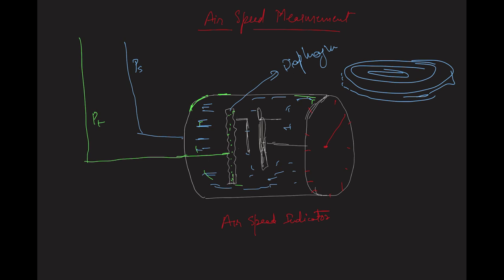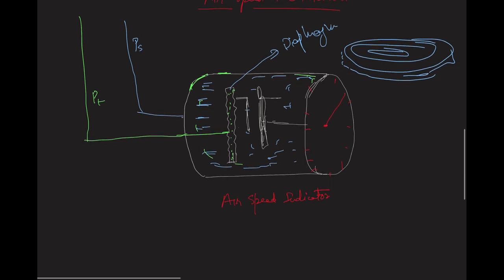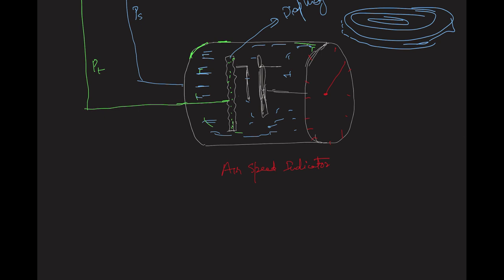There is a difference in both pressures — total pressure inside and static pressure outside. The total pressure will be more than static pressure since the aircraft is moving, because total pressure is a combination of static pressure and dynamic pressure. So the total pressure will always be more, causing the diaphragm to expand. As the diaphragm expands, this linear movement is captured by levers and gear linkages and converted into the movement of a needle.